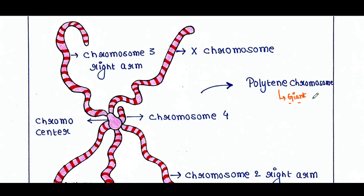This chromosome is actually found in the salivary gland of Drosophila larvae. We know that Drosophila melanogaster, that is the fruit fly, has four pairs of chromosomes. You can see that this is the large X chromosome.